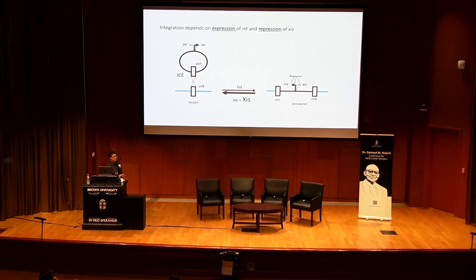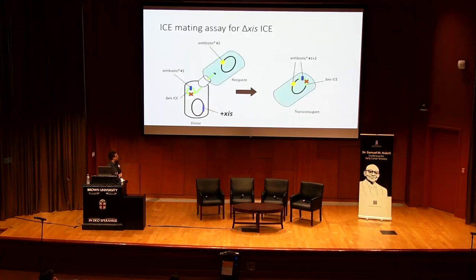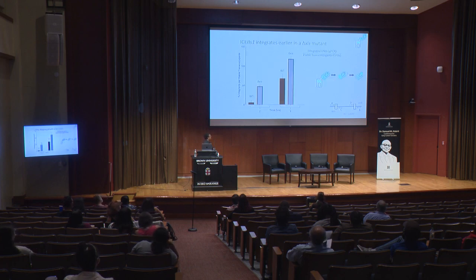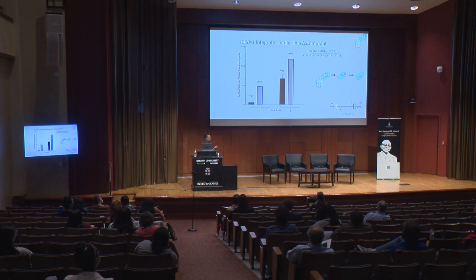Based on this, I made a simple prediction: if I delete the excisionase, I bypass the need for repression of gene expression and dilution of the protein, so integration depends only on expression of the integrase. I made a simple deletion of the excisionase on the element, provided Xis in trans so the element can excise from the donor chromosome and transfer to recipient cells, then observed the mutant ICE behavior in transconjugants. As predicted, this led to earlier integration — at the two-hour time point, approximately 45% of the transconjugants had integrated the element, measured by qPCR.